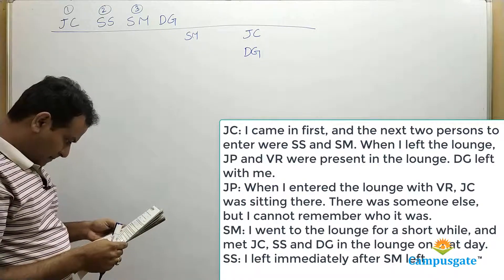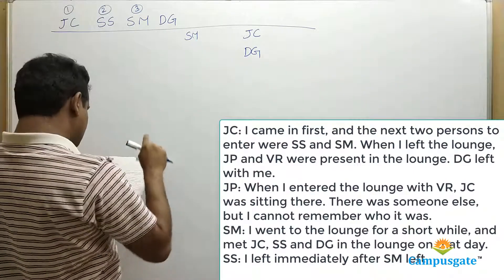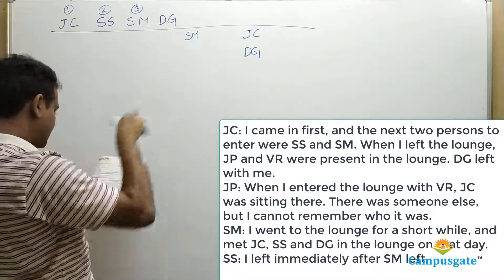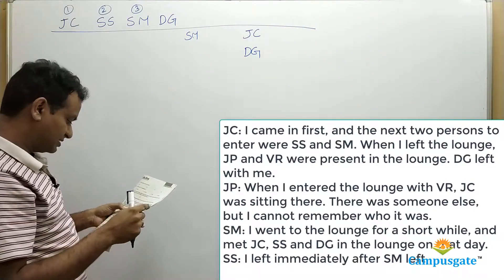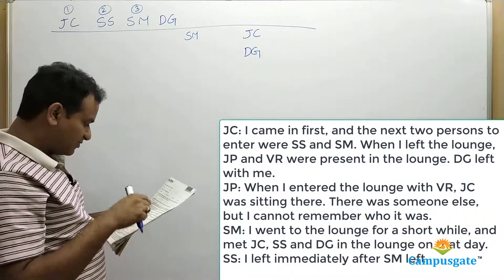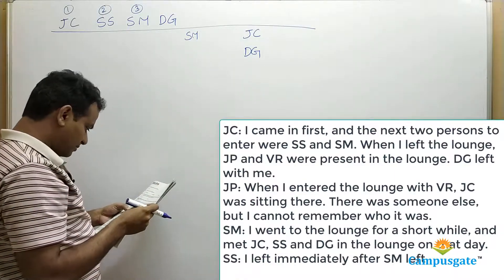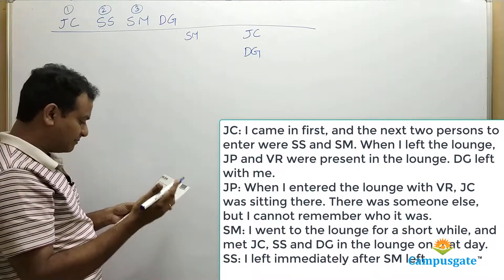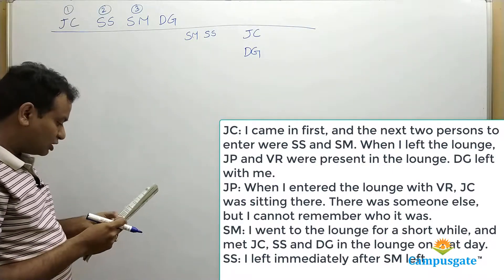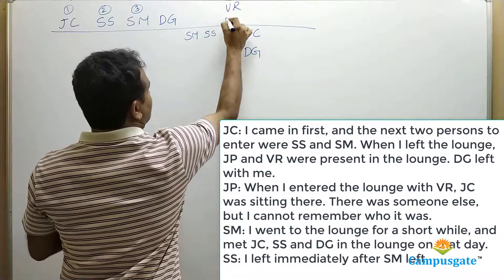Looking at JP's clue — the second clue — JP says: 'When I entered the lounge with VR, JC was sitting there, and there was someone else but I cannot remember who it was.' It is already given that JC and DG left together, so JP must have seen DG. By the time JP and VR entered together, SM and SS both must not be there — they must have already left. SS confirmed in clue 4 that she left immediately after SM left. So VR and JP arrived together at this point in the diagram.